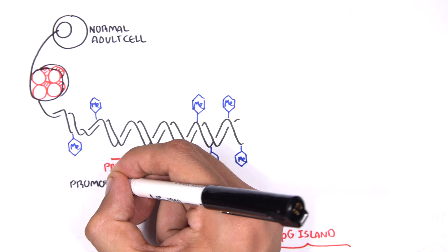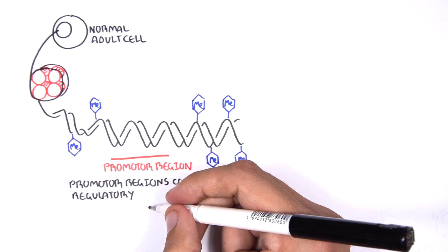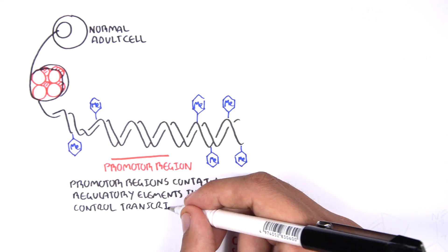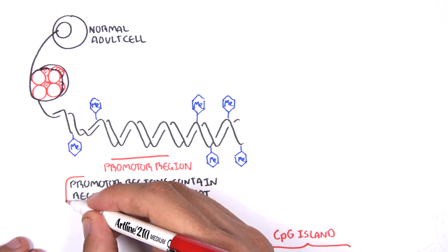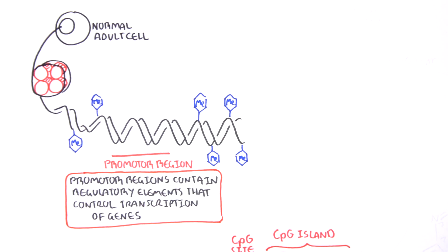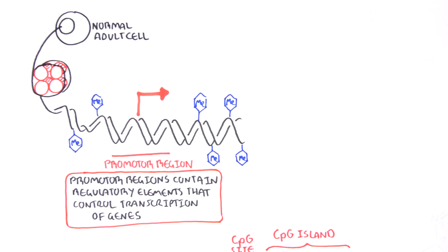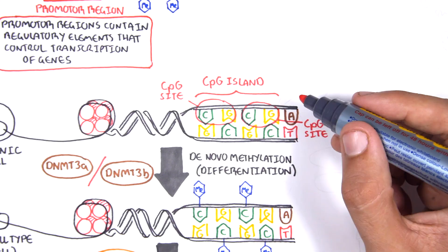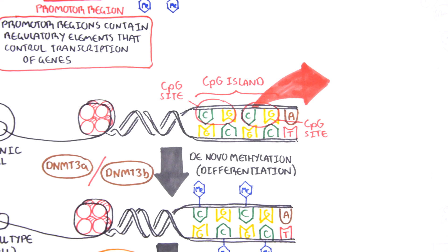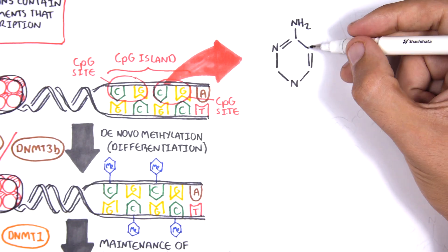Promoter regions are regions in the DNA that contain regulatory elements that control transcription of genes. To understand how CPG sites are methylated, let us zoom into this cytosine nucleotide here and look at its chemical structure.